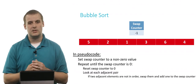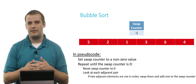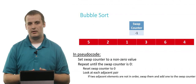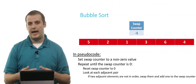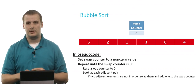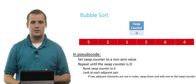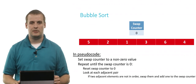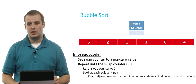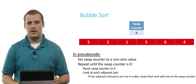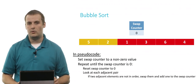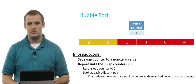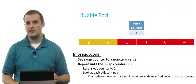The steps are: reset the swap counter to zero, then look at every adjacent pair, and if they're out of order, swap them and add one to the swap counter. So let's begin. The first thing we do is set the swap counter to zero. Then we start looking at each adjacent pair — we first look at five and two. We see that they are out of order, so we swap them and add one to the swap counter.